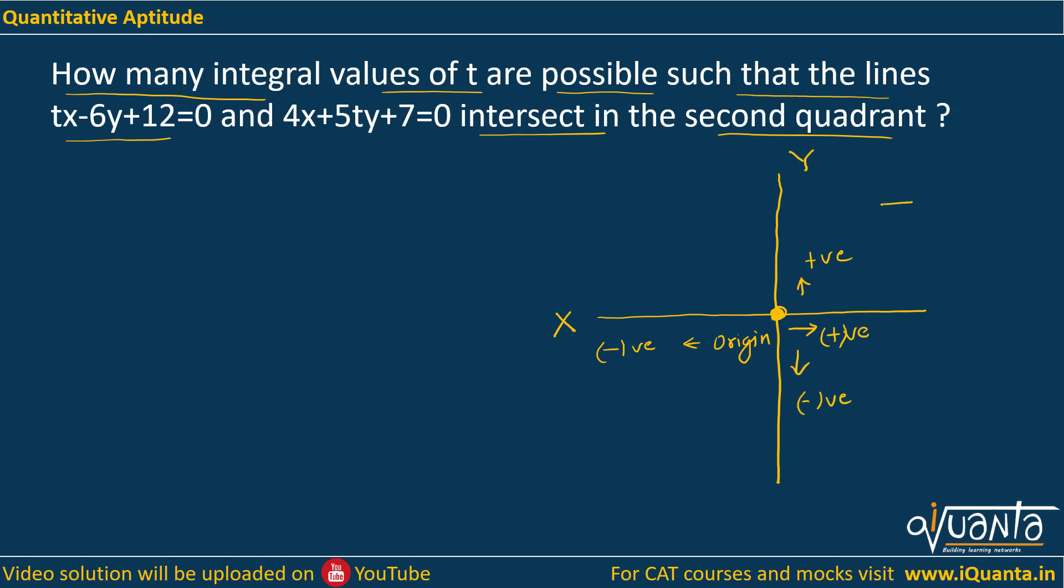We call this quadrant the first quadrant. This quadrant is the second quadrant. This is the third quadrant and this is the fourth quadrant. We move anti-clockwise and the number of the quadrant increases: first, second, third, and fourth quadrant.